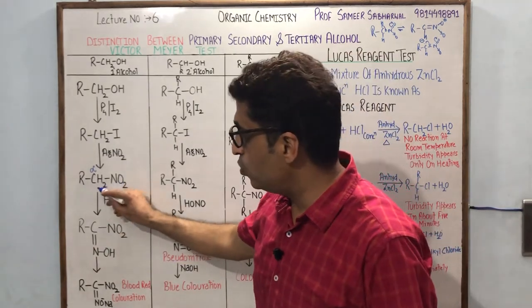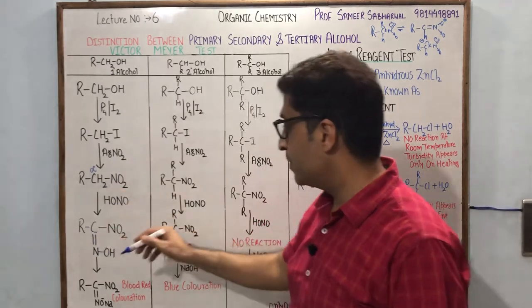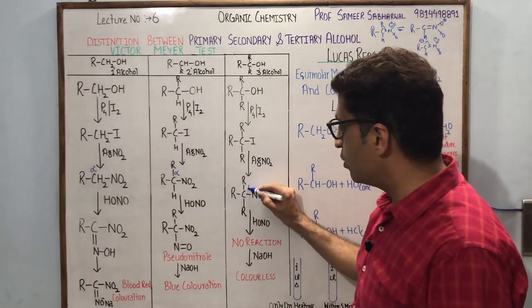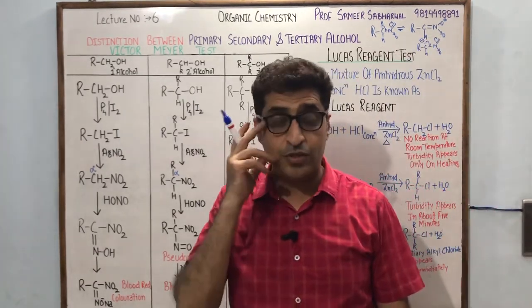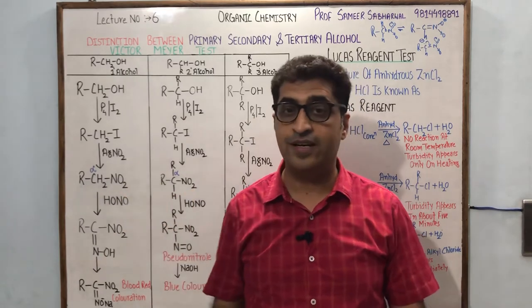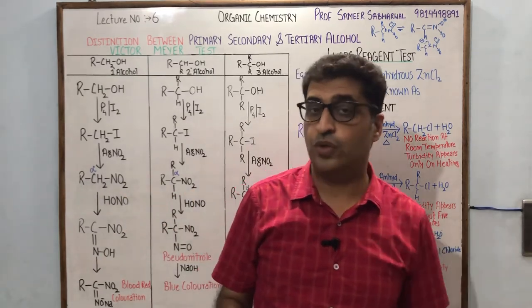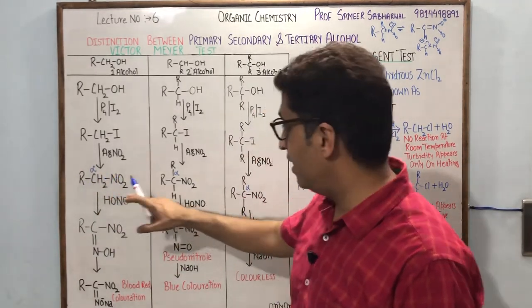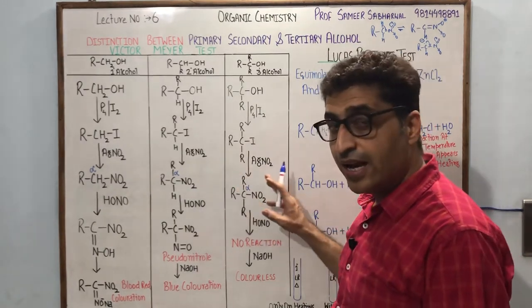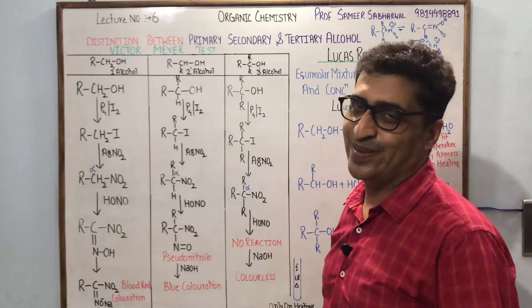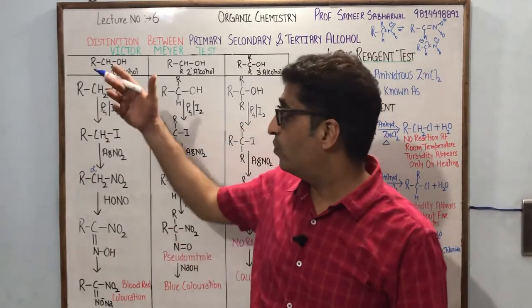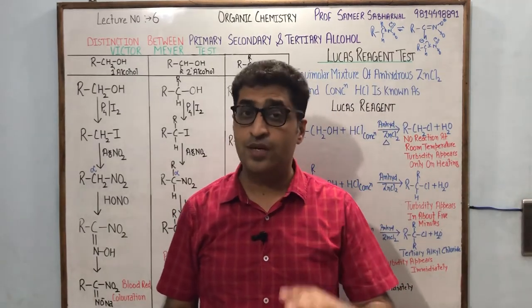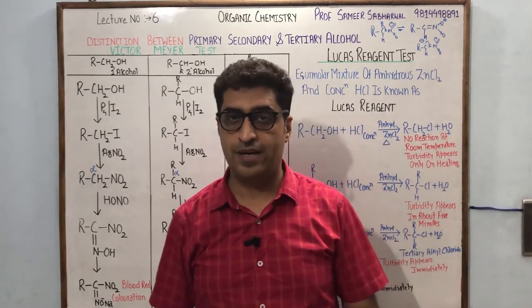Primary nitroalkane RCH2NO2 has two alpha hydrogens, so two acidic hydrogens. Secondary nitroalkane has one alpha hydrogen, and tertiary nitroalkane has no alpha hydrogen. This chemistry is very interesting — we can distinguish RCH2NO2 (1° nitroalkane), 2° nitroalkane, and 3° nitroalkane with this test. By doing Victor Meyer's test we are able to distinguish primary, secondary, and tertiary alcohols.